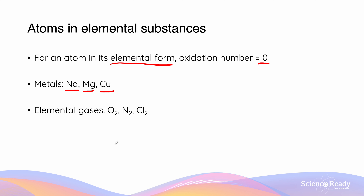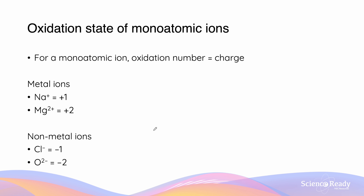Similarly, elemental gases such as diatomic oxygen, nitrogen, and chlorine are all going to have oxidation states of zero. For monatomic ions, the oxidation number is equal to its charge. If we look at the metal ions Na⁺ and Mg²⁺, they are going to have oxidation states equivalent to their charge. Na⁺ has an oxidation state of +1, and magnesium has an oxidation state of +2.